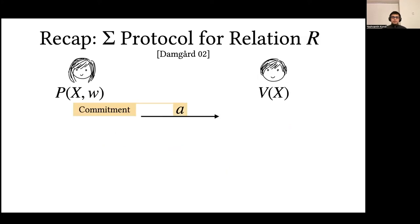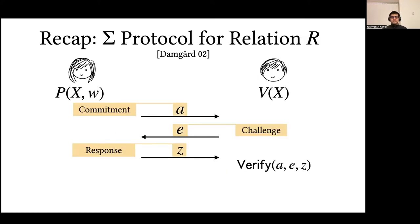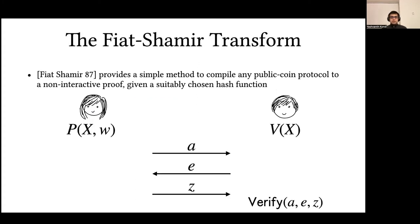Recall that a Sigma protocol consists of a commitment, a challenge, and a response that's exchanged between a prover and a verifier. The Fiat-Shamir transformation gives a simple way to compile a Sigma protocol to a non-interactive proof with a suitably chosen hash function. Intuitively, the prover simply hashes the statement along with its first message to replace the verifier's challenge.